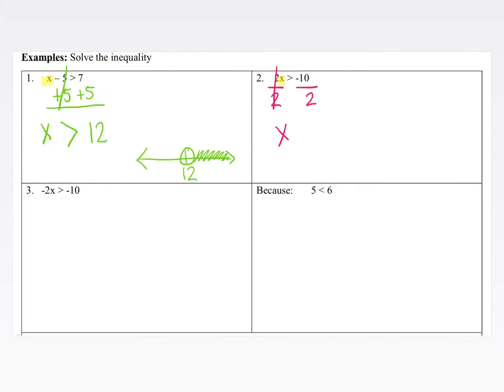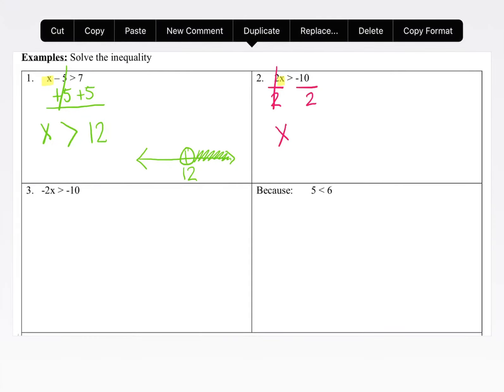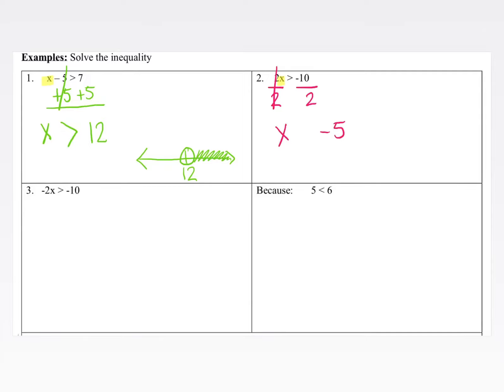And negative 10 divided by 2 is negative 5. Now because we divided by a positive number here, this is a positive 2, our inequality remains true. So we do not need to change our inequality at all. Just x is greater than negative 5.